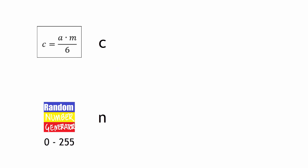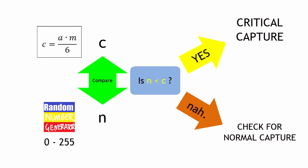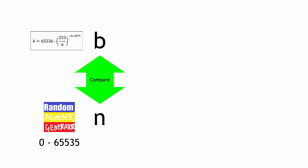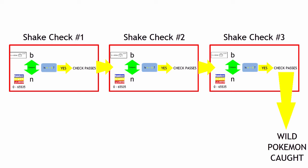The computer generates a random number N between 0 and 255 and compares it against C. If N is less than C, you perform a critical capture. Otherwise, you continue the shake to see if you can capture it normally. The computer then generates a random number N between 0 and 65,535 — which is 2 to the power of 15 minus 1 — and compares it against B. If N is lower than B, the shake check passes. You have to pass this shake check three times in a row to catch the Pokemon. The computer generates a new N each time and compares it against B. If you complete all three, you catch your Pokemon.